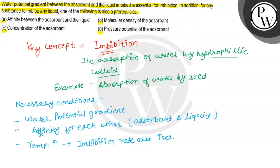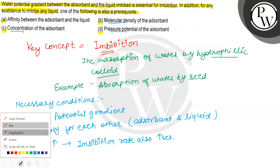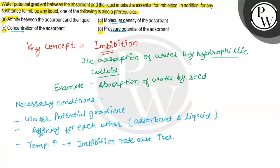और जो molecular density है, pressure potential है, and concentration है, इनका imbibition पे कोई effect नहीं होता। तो options के according, मारा right answer क्या होगा? Option A - that is affinity between the adsorbent and the liquid. I hope you understood it well, all the best.